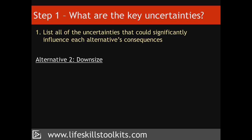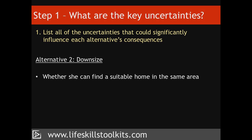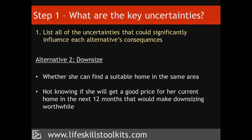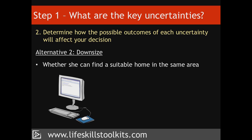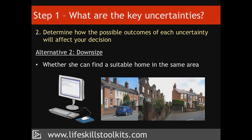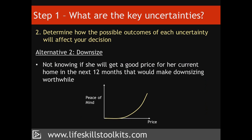The uncertainties she identifies include whether or not she could find a suitable home in the same area, and not knowing if she would be able to get a good enough price for her current home in the next 12 months to make downsizing worthwhile. After visiting a number of property websites, Franny realises there are a number of suitable two-bedroom homes available in her area, so this uncertainty is something she no longer needs to worry about. Whether she would get a good price for her current home in the next 12 months remains more of a problem, since the more she can sell it for, the greater her financial peace of mind – so this will require further consideration.